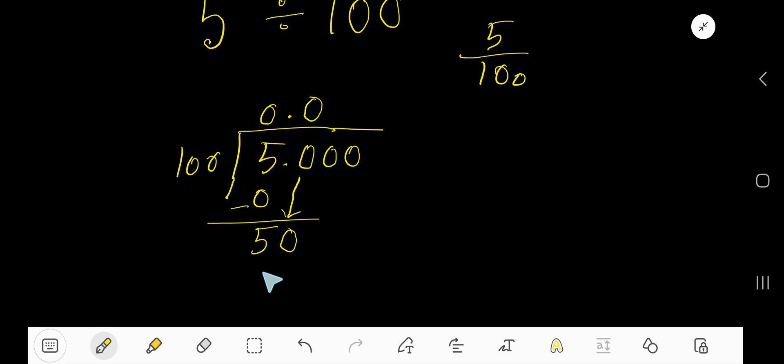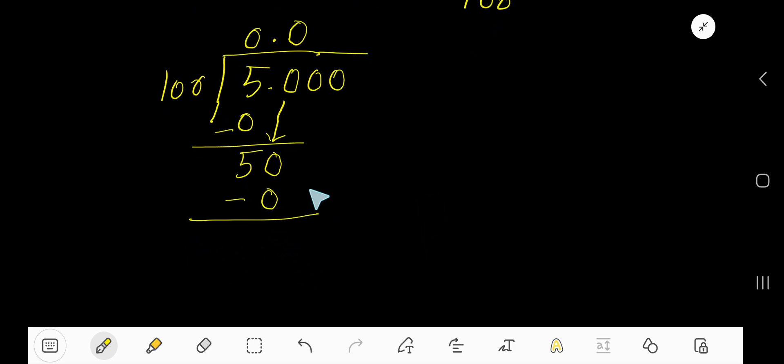0 times 100, 0. If you subtract, then you will get 0, 5, 50. Bring down this 0, 500. 100 goes into 500. How many times? We need multiplication table of 100.